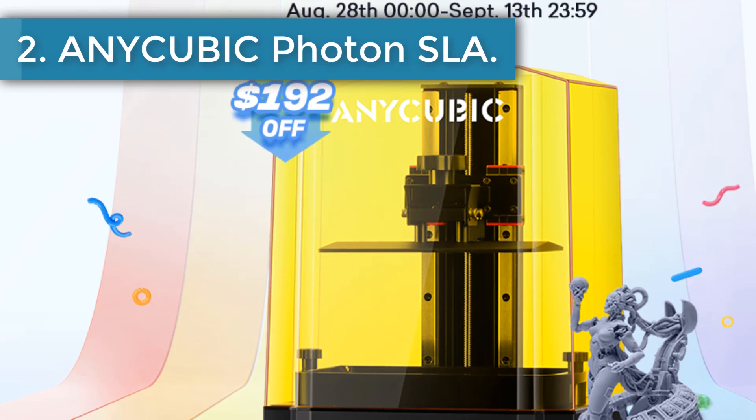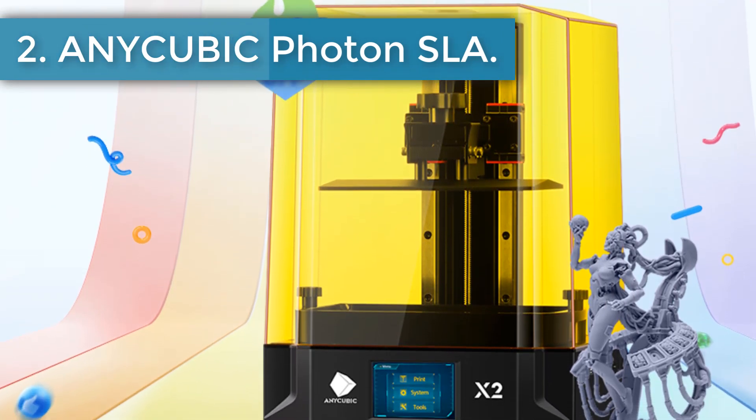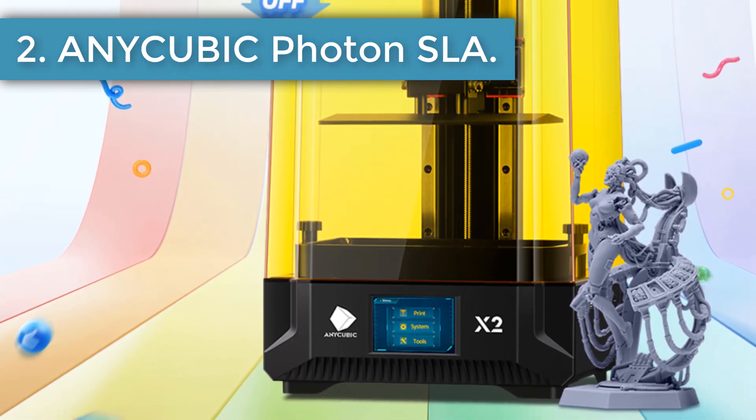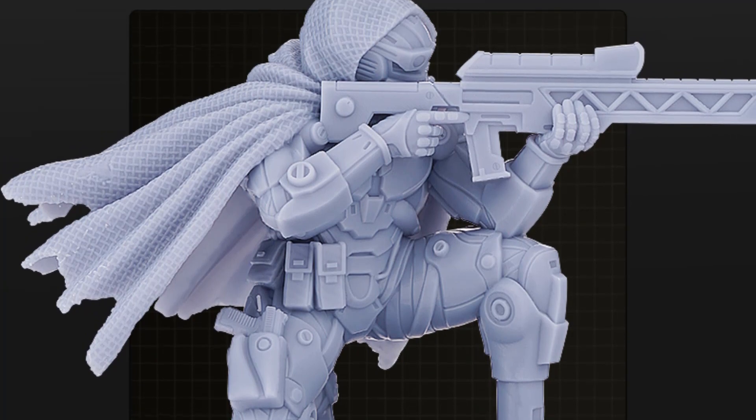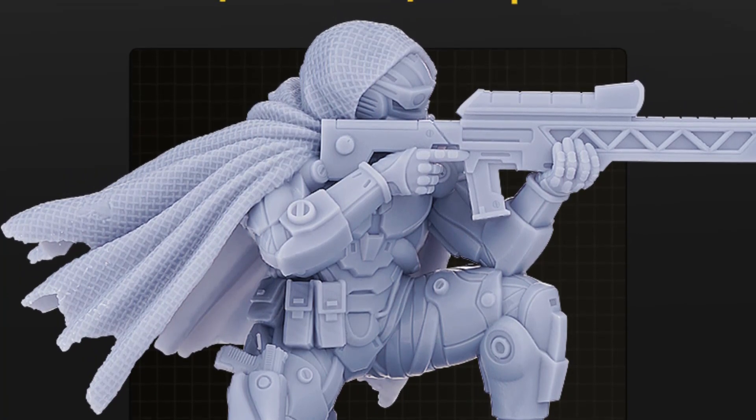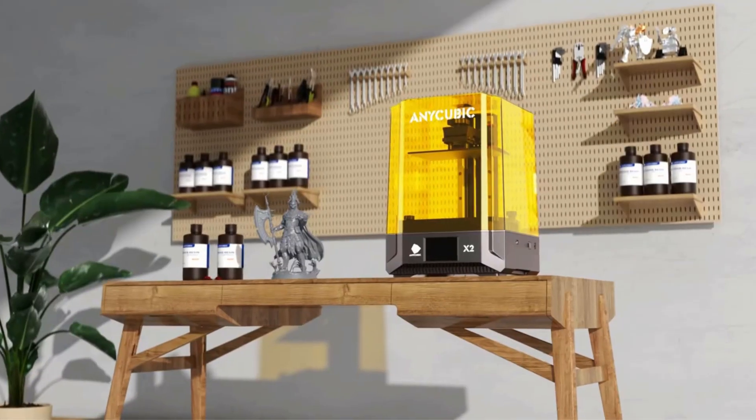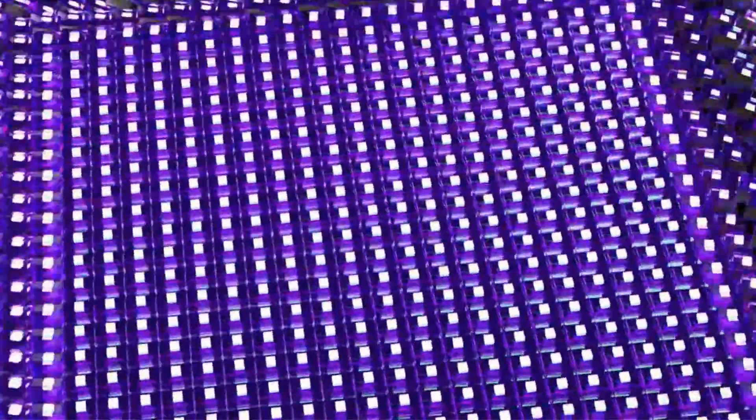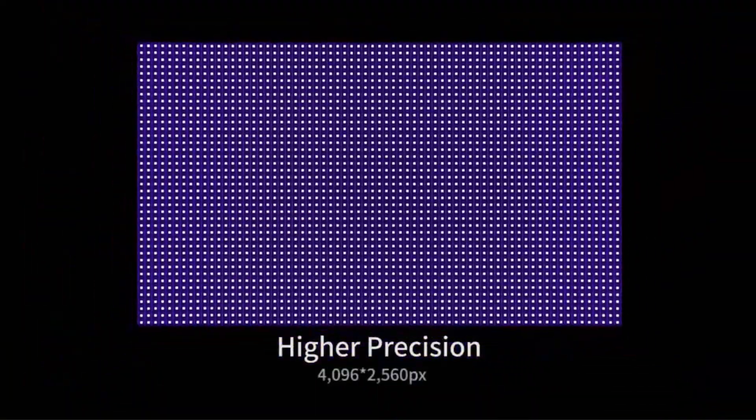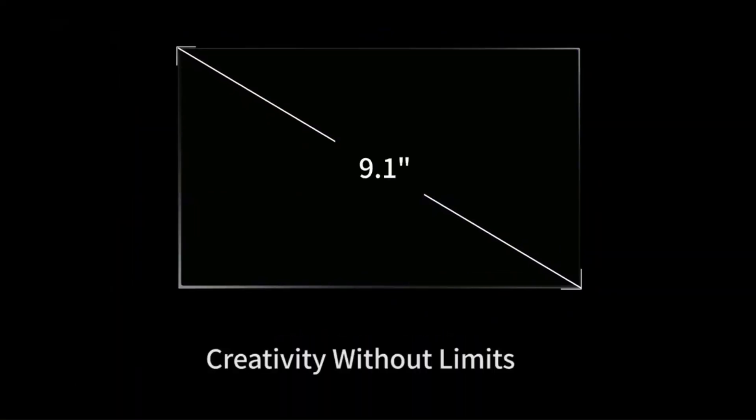Number two: Anycubic Photon SLA. Anycubic is a famous 3D printer Chinese brand that is available on AliExpress, Amazon and other big marketplaces. Photon SLA 3D printer by Anycubic is one of the best 3D printers on AliExpress. It is easy to set up as it is almost completely pre-assembled with all the proper tools to start. It has a sensitive touch screen that makes a better experience for the user.